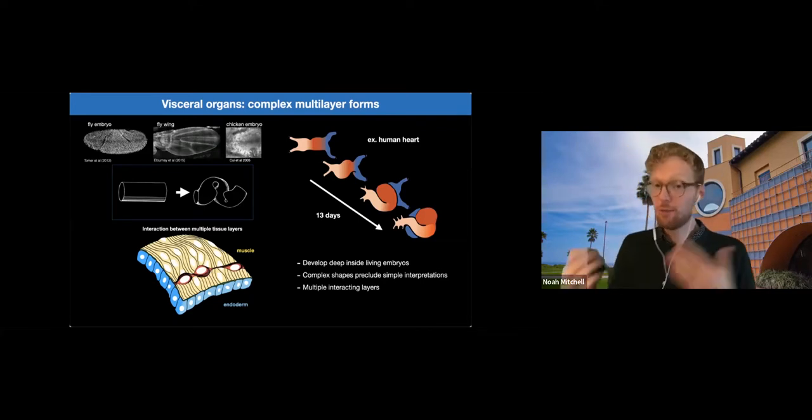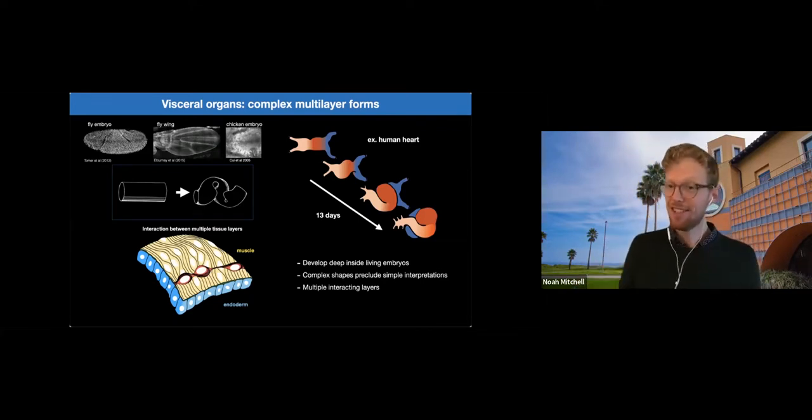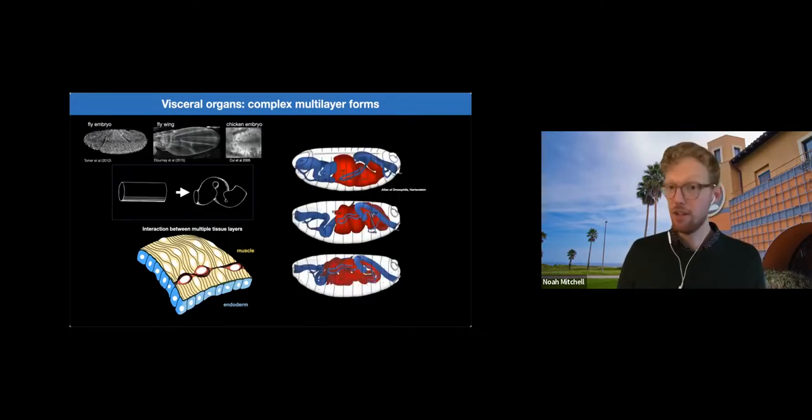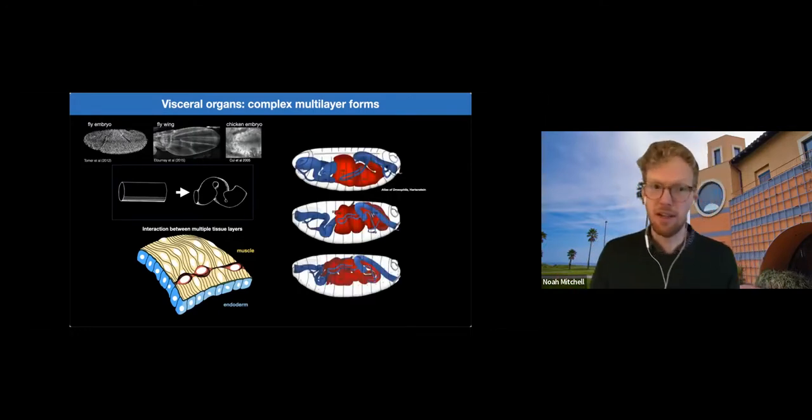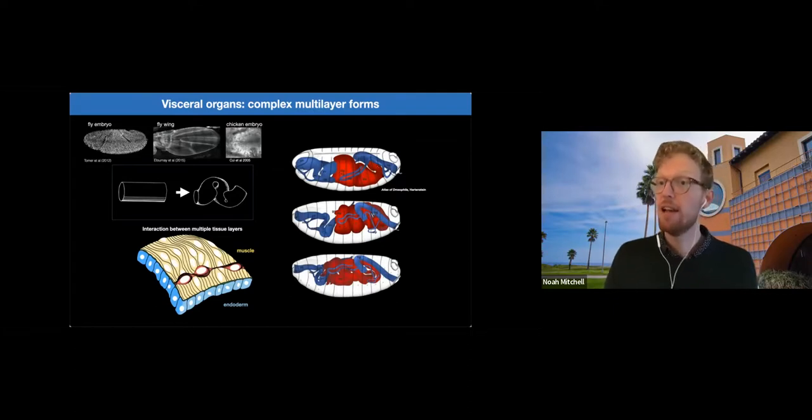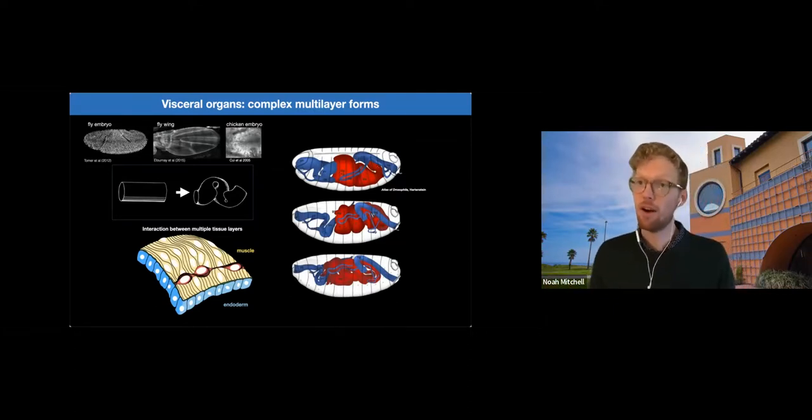So for these reasons, we need a model system to address this question of how visceral organs take form. And we envision the fly midgut, which is sketched here in red, as a new model system for a quantitative approach to organogenesis.